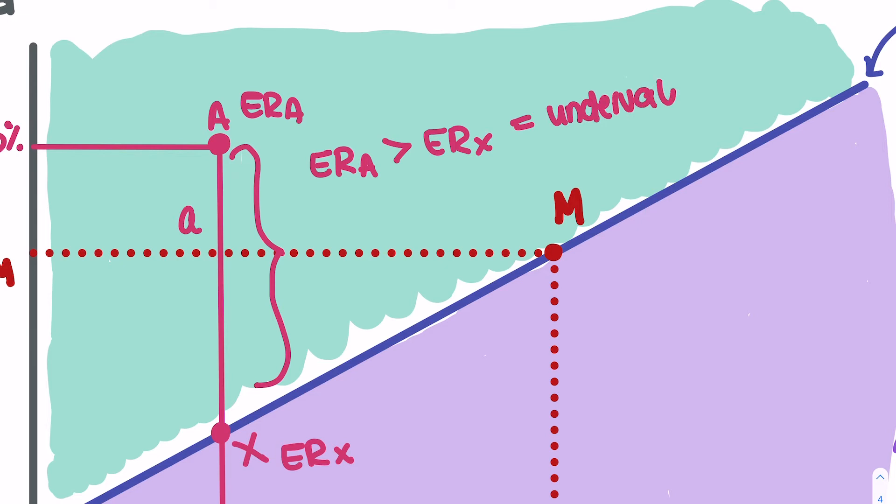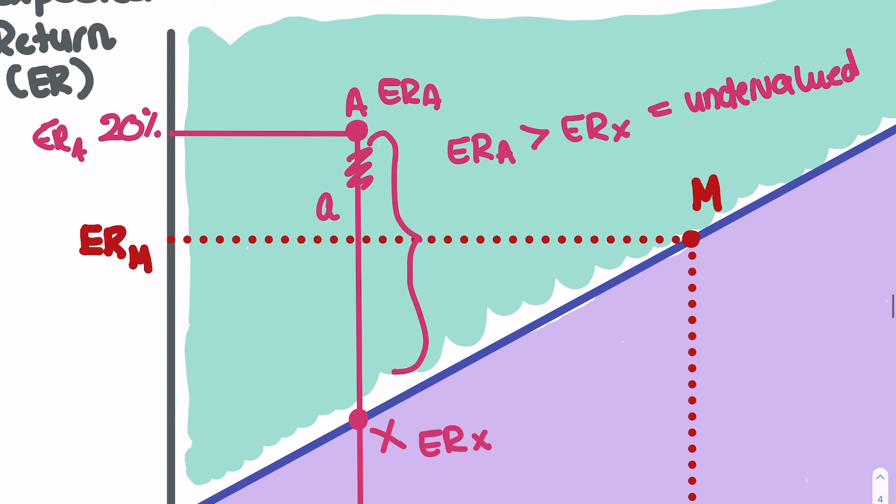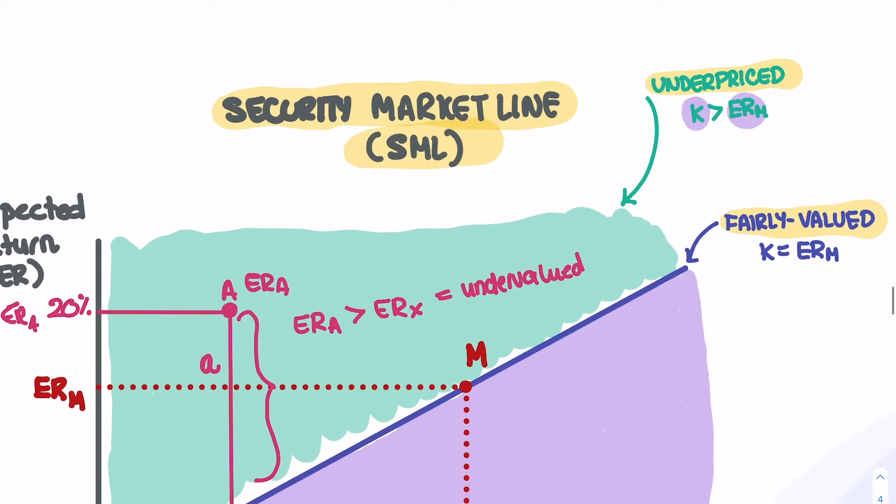than ERX. And for that reason, we could say that the stock is actually undervalued. Our stock is undervalued because there are much more returns that are being made by our investors at this point. There are much more returns being made. And this is what we call actually alpha. There are much more returns that are being made over the SML. So this is what we call a point that's being undervalued.